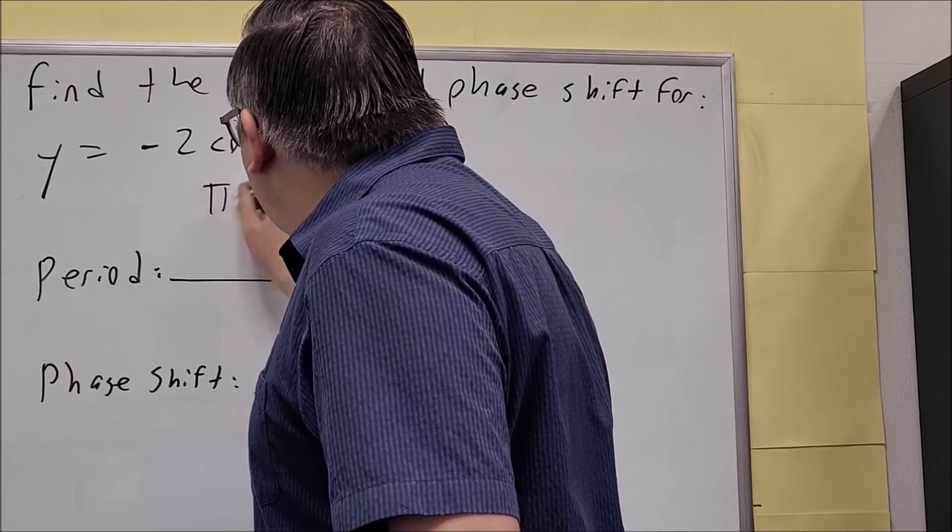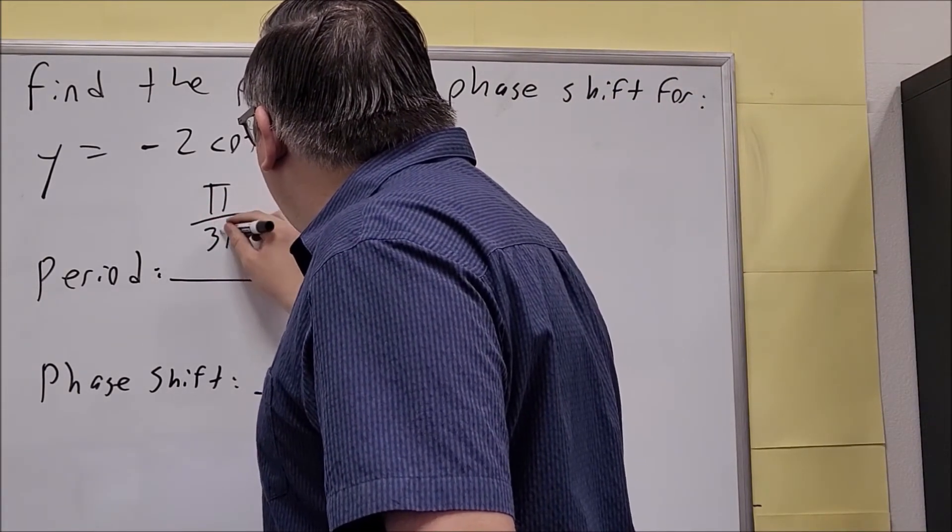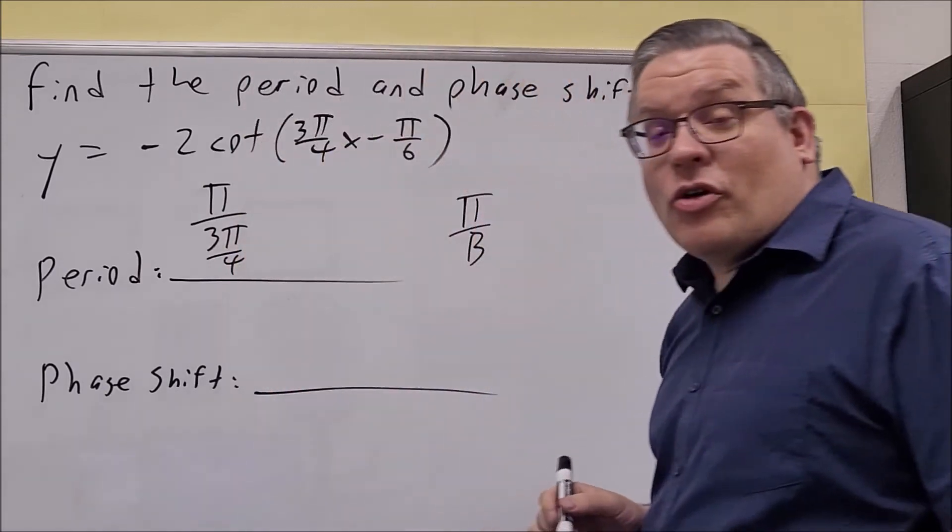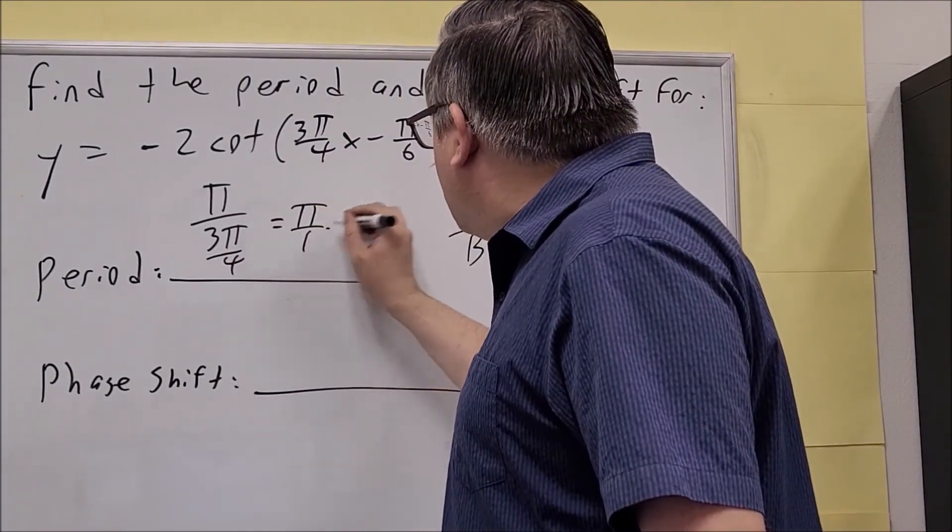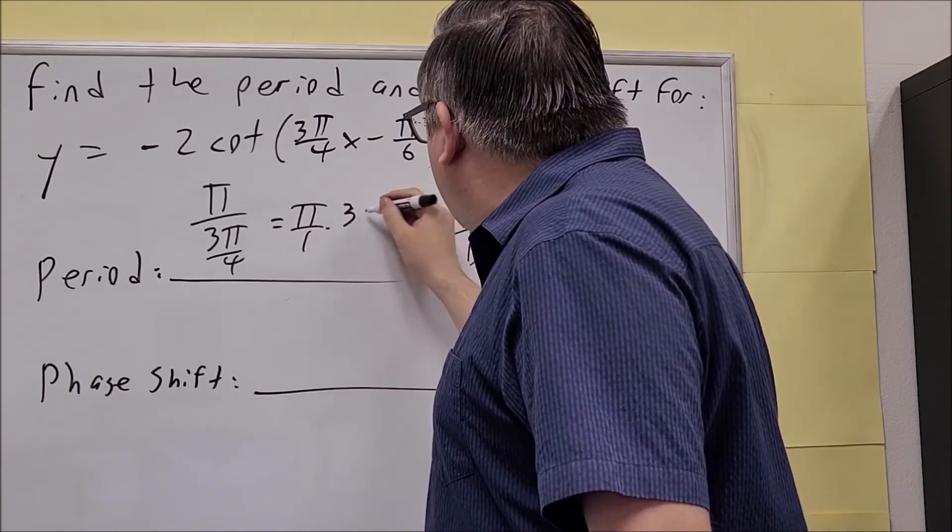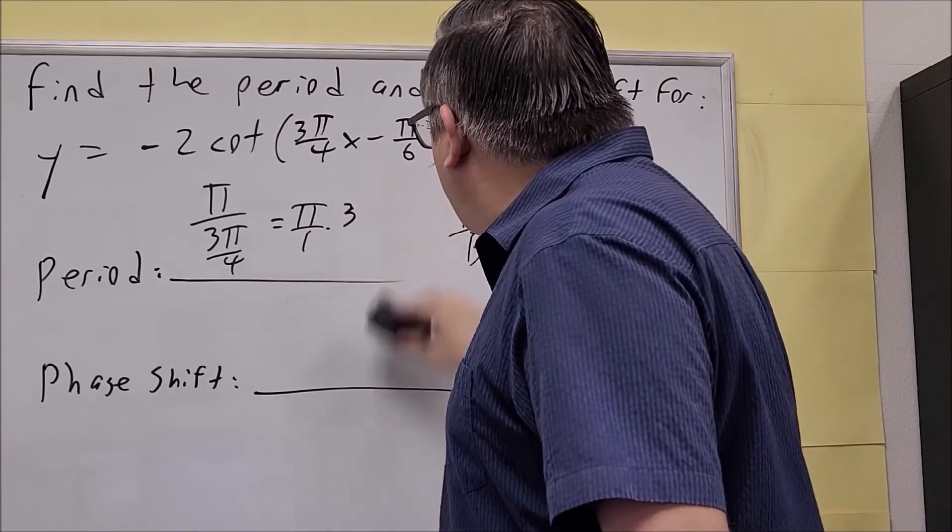We're going to do π divided by the number in front of the x, which is 3π over 4. We have to flip and multiply this one, so we're going to do π over 1 times 4 over 3π.